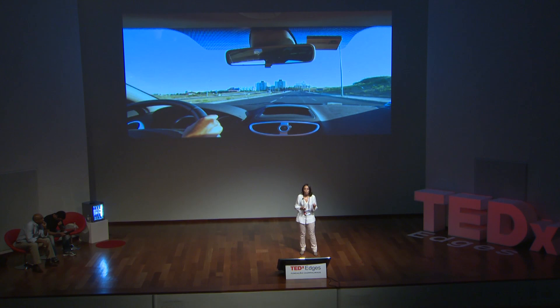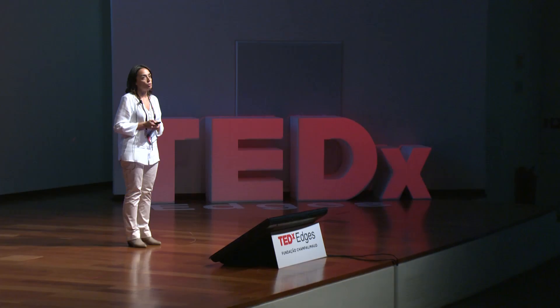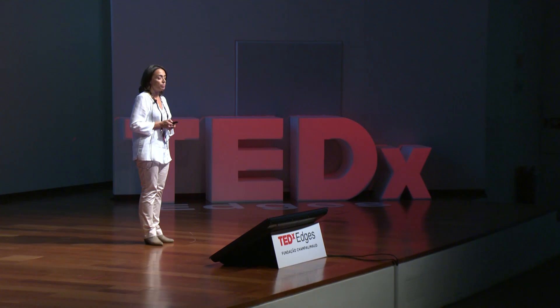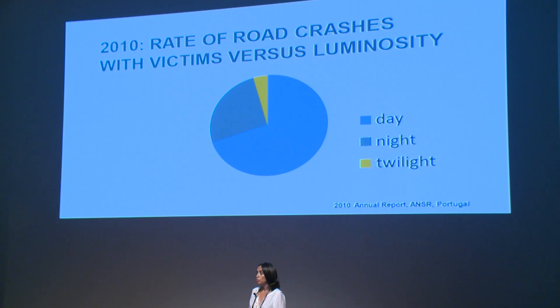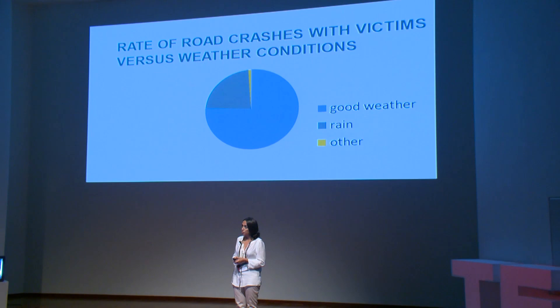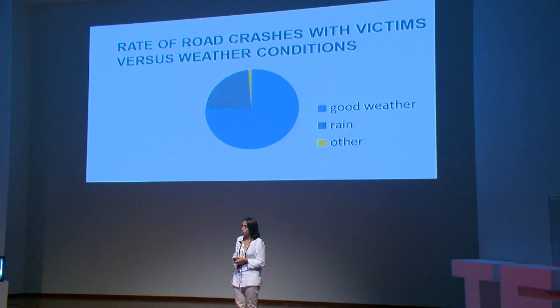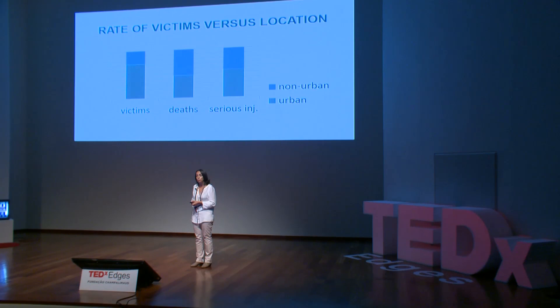But before we go into our roads, I would like to bring you some statistics of what happened on our roads. Portugal, 2010: about 47,000 victims, 800 deaths — twice the audience at this auditorium. Surprisingly, most of the crashes with victims occurred during the day, under good weather, and most of the victims are from crashes in urban areas where velocities are supposed to be lower.